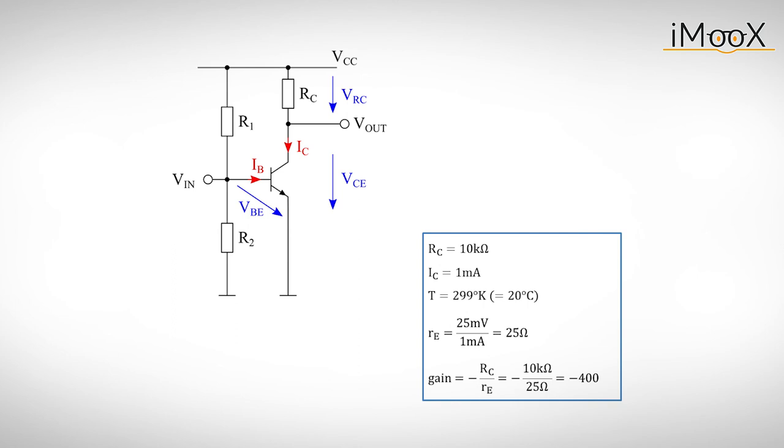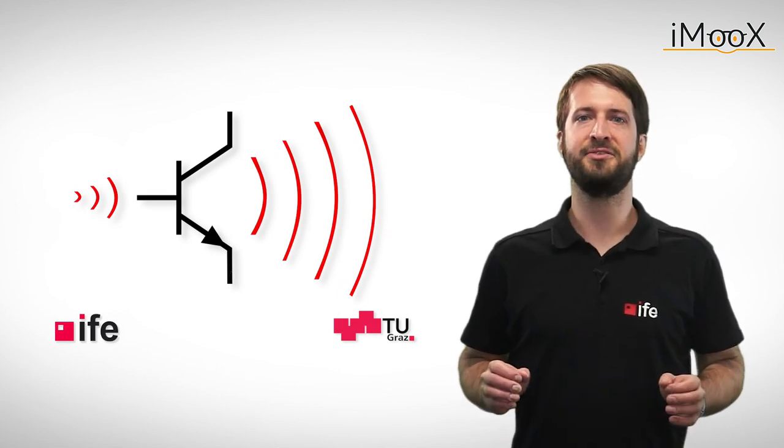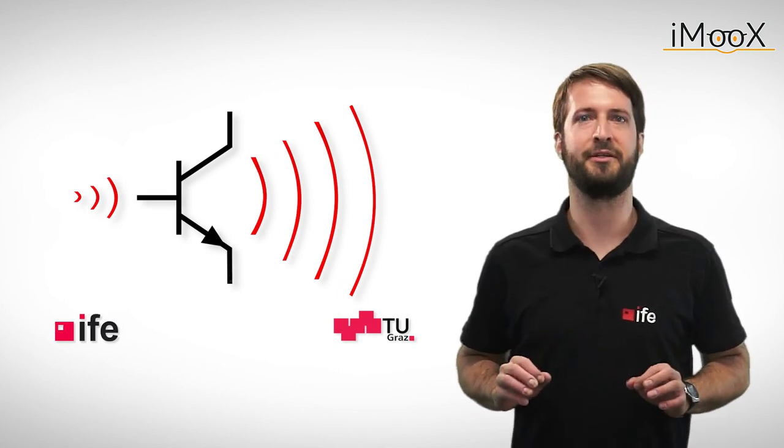If we now think back to our example from before, we get a finite gain of RC divided by the intrinsic resistance RE for an amplifier with grounded emitter. Despite the high gain, this circuit is generally not a good amplifier.